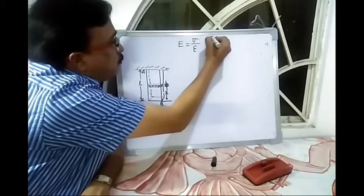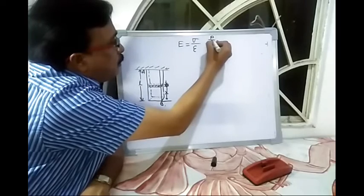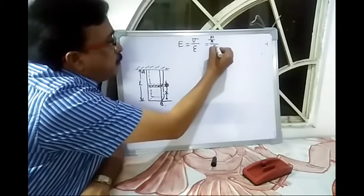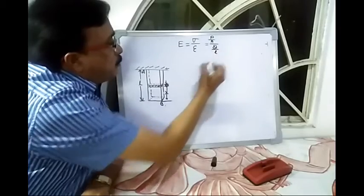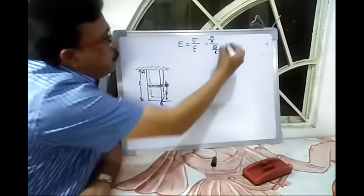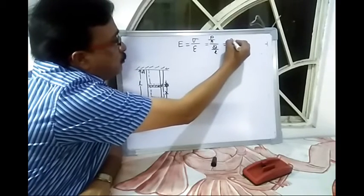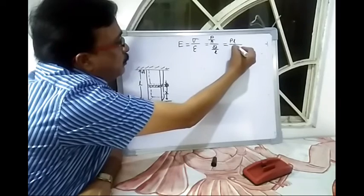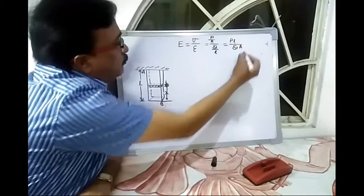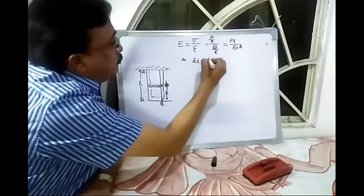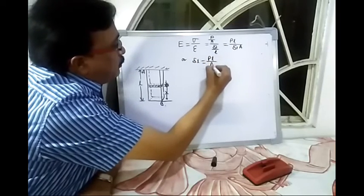Now stress is equal to force per area, and strain is delta L by L, deformation by original length. So this is equal to PL divided by delta L into A, or delta L is equal to PL divided by AE.